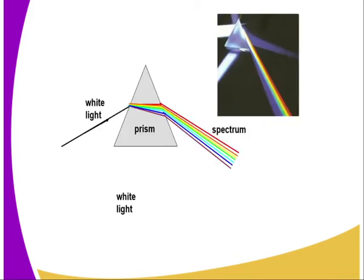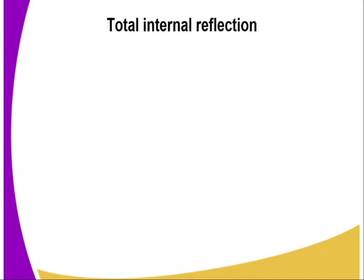For instance, in the example given here, you can see if white light falls on a prism, it is dispersed and gives us the seven bands of colors — we have red, yellow, green — and this gives us the seven colors of the rainbow, as you can see from the splitting of the white light.